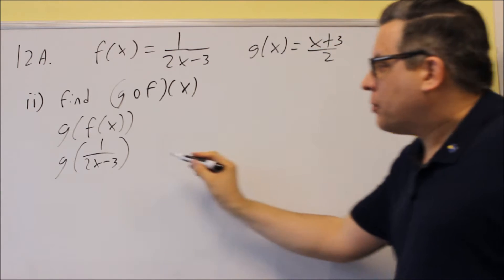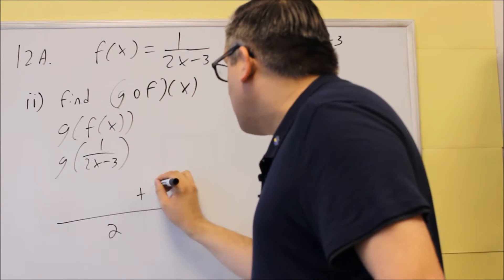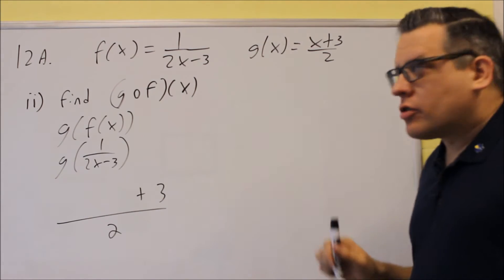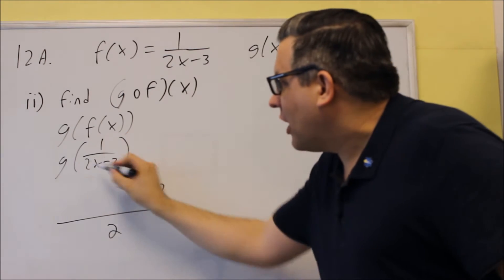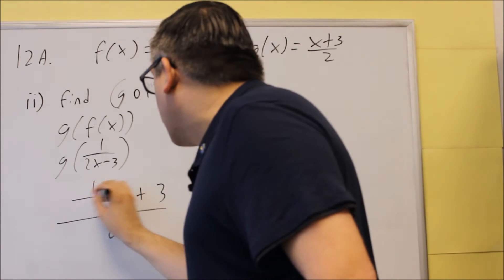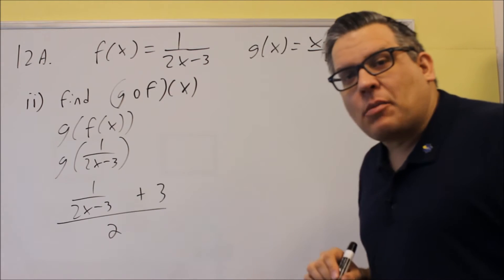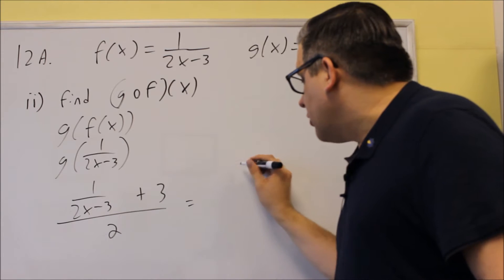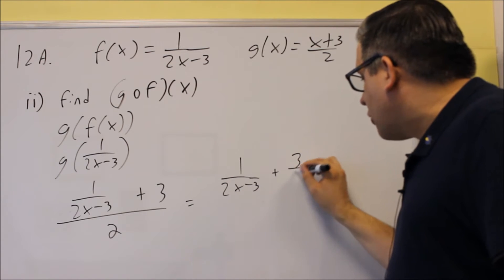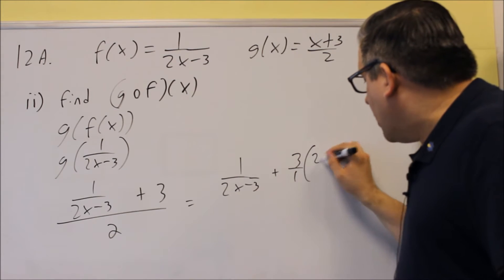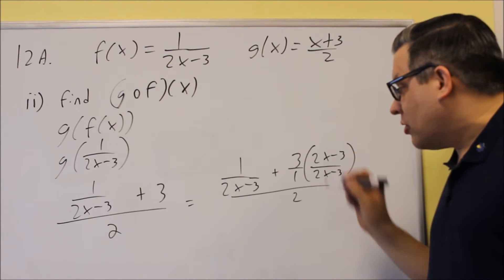This has got to go into the g function. Everywhere I see an x, I'm going to replace it with 1 over 2x minus 3. Here's my original template: I've got something plus 3 over 2. If I remove the x, that space is going to get replaced with whatever I have inside the parentheses — so I have 1 over 2x minus 3. Now it does say write it as a single fraction, so I want to get some common denominators. The 3 can be written as 3 over 1, and I'm going to multiply top and bottom by 2x minus 3 to get a common denominator.